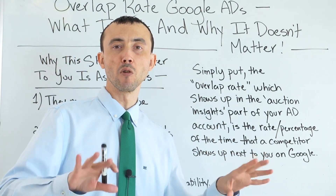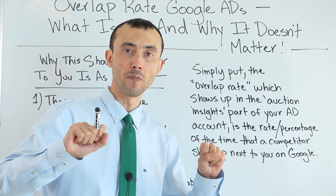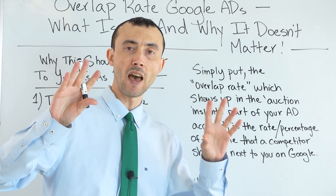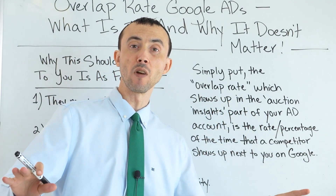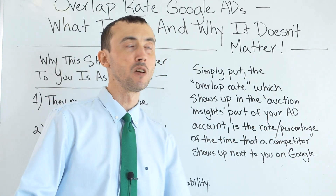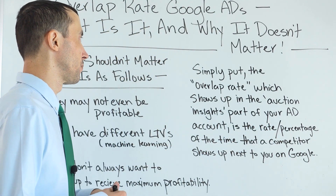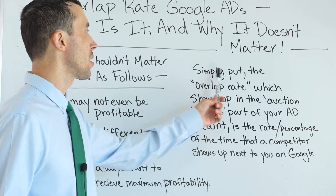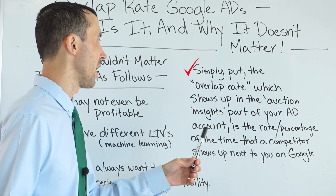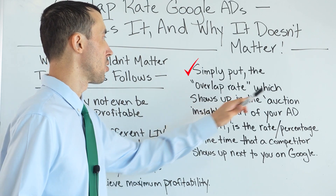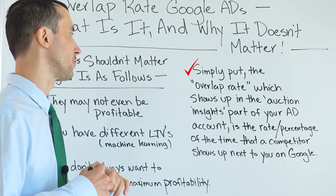Everything that you need to know to make the most money on Google Ads as it pertains to overlap in the ad auctions on Google. To get directly into the content here, simply put, the overlap rate, which shows up in the auction insights part of your ad account,